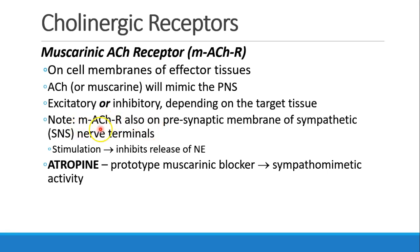There are some muscarinic acetylcholine receptors on the presynaptic membrane of sympathetic nerve terminals. When they get stimulated, it inhibits release of norepinephrine.